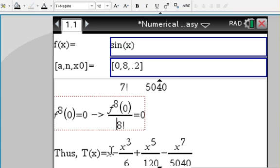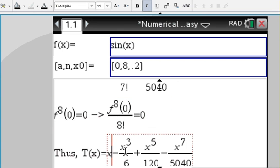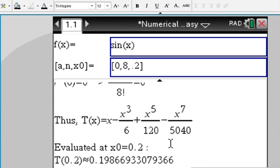Here's the odd function Taylor polynomial. Then we are plugging in 0.2 into our Taylor polynomial to approximate T(0.2) to get this answer.